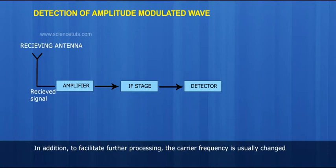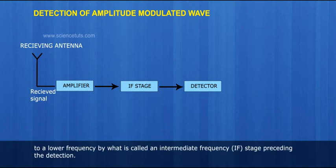In addition, to facilitate further processing, the carrier frequency is usually changed to a lower frequency by what is called an Intermediate Frequency IF stage preceding the detection.